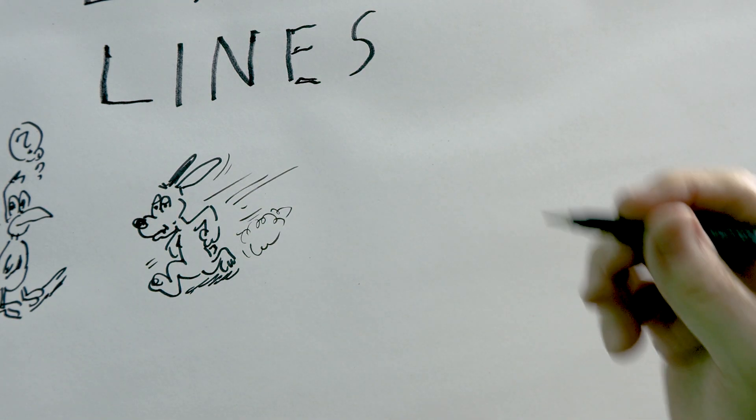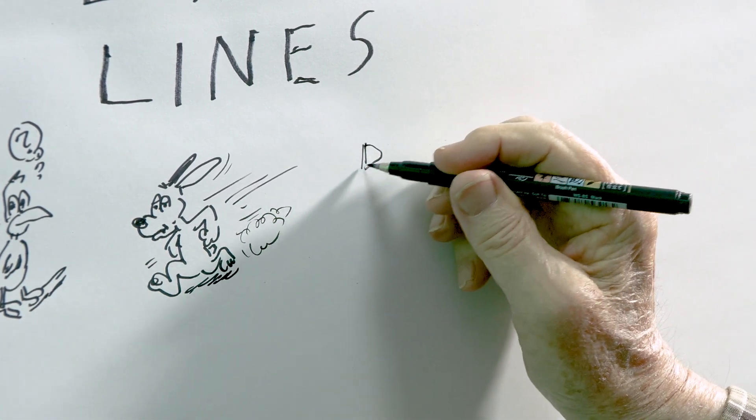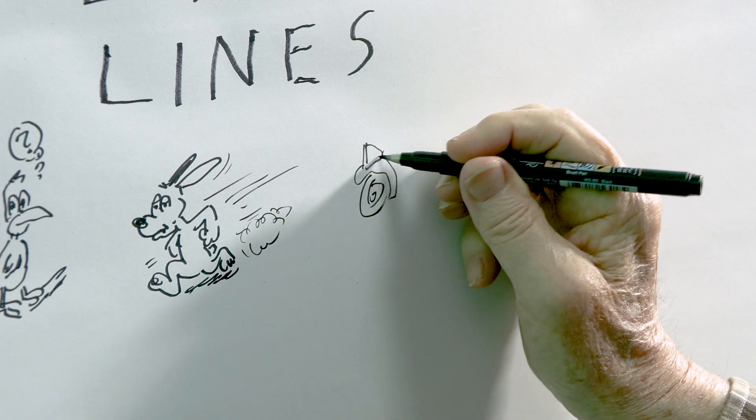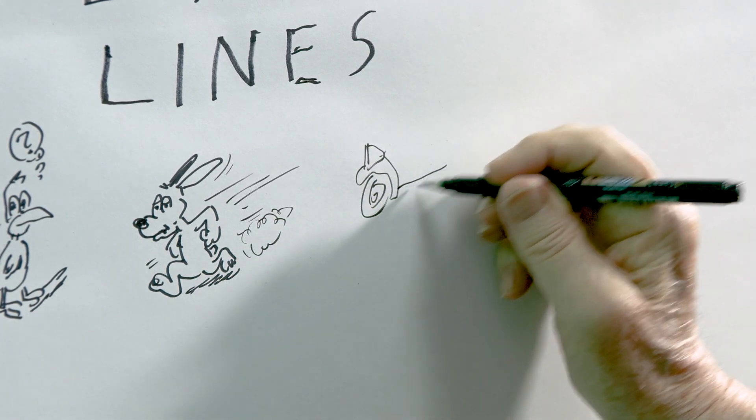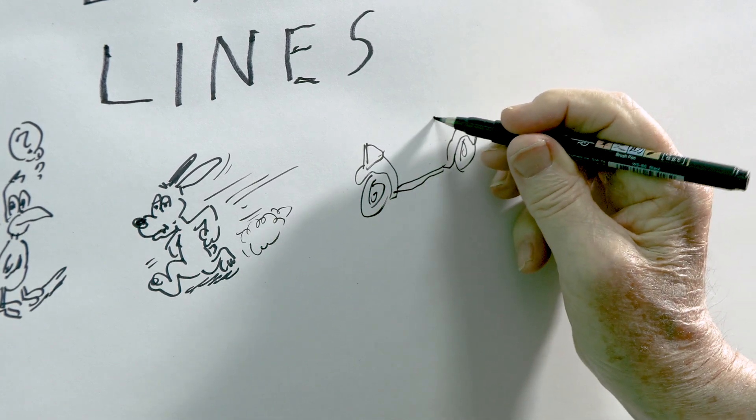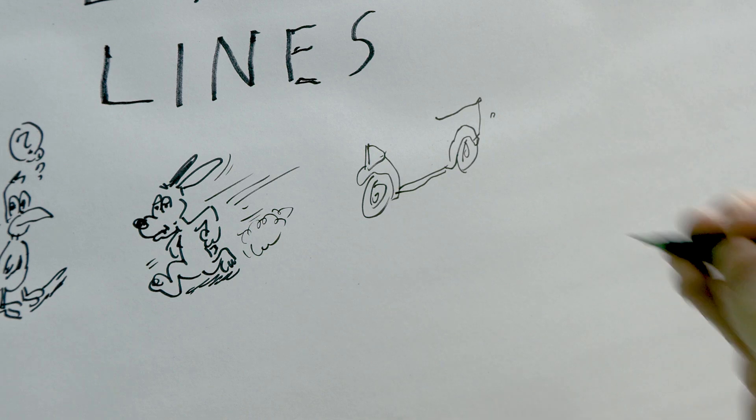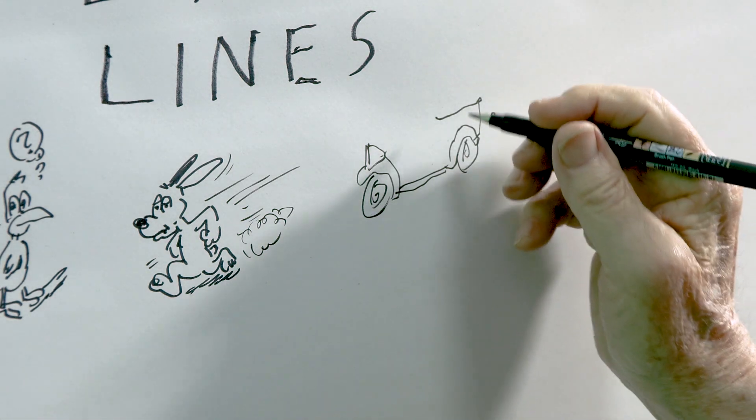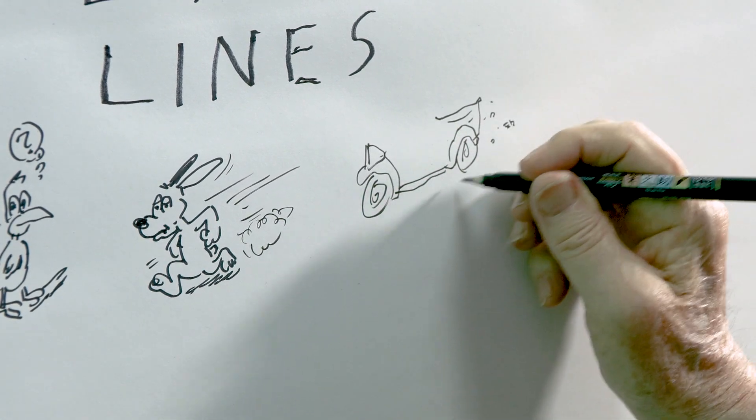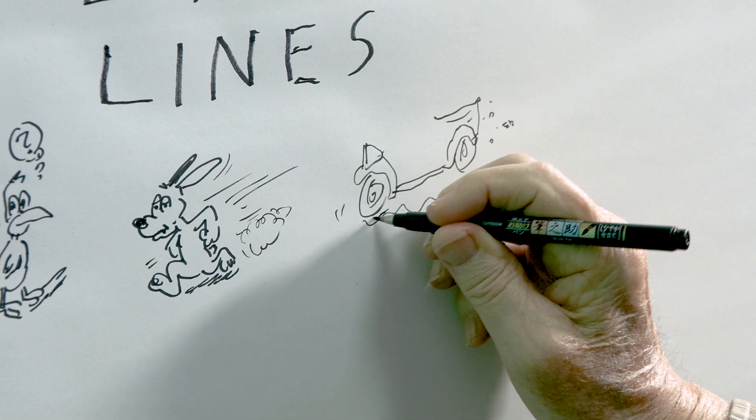That first one doesn't indicate movement, but it is an example of lines in cartoons. This next one doesn't involve a person or a bird or a rabbit. It's an old rattle trap of a car. You can tell it's old because it's got the headlight there up on the fender. And it just looks kind of beat up, a pickup truck.